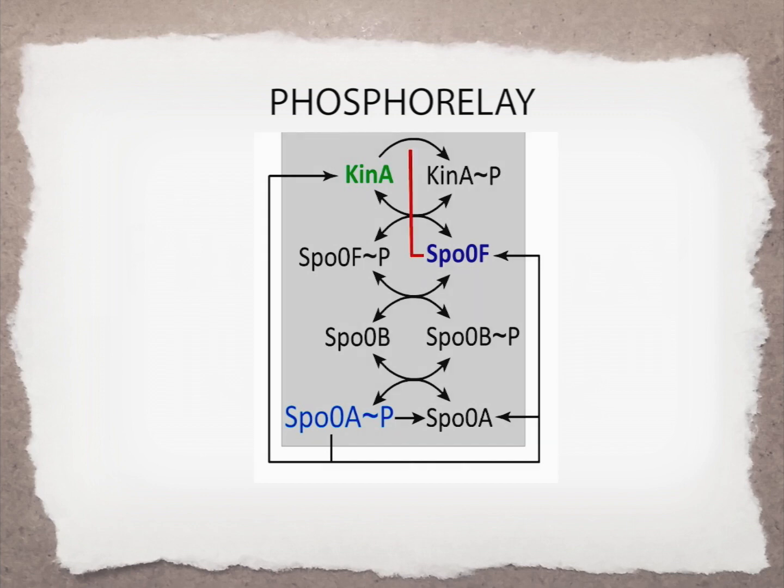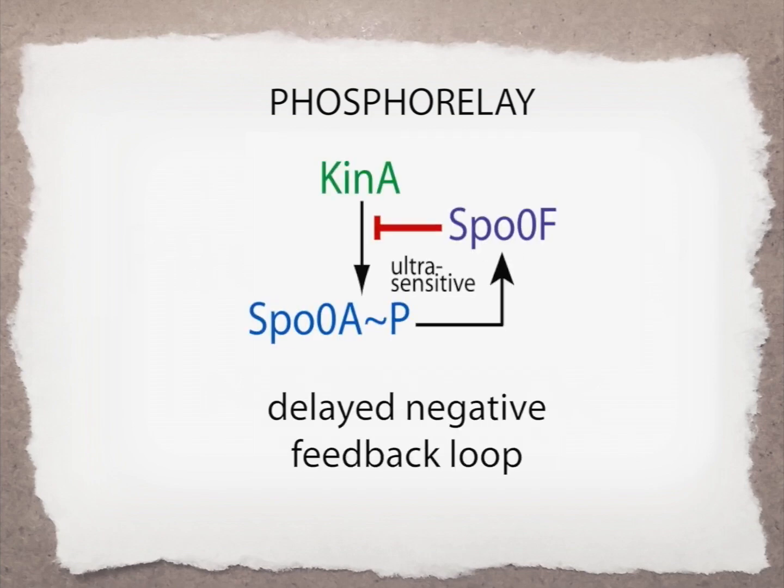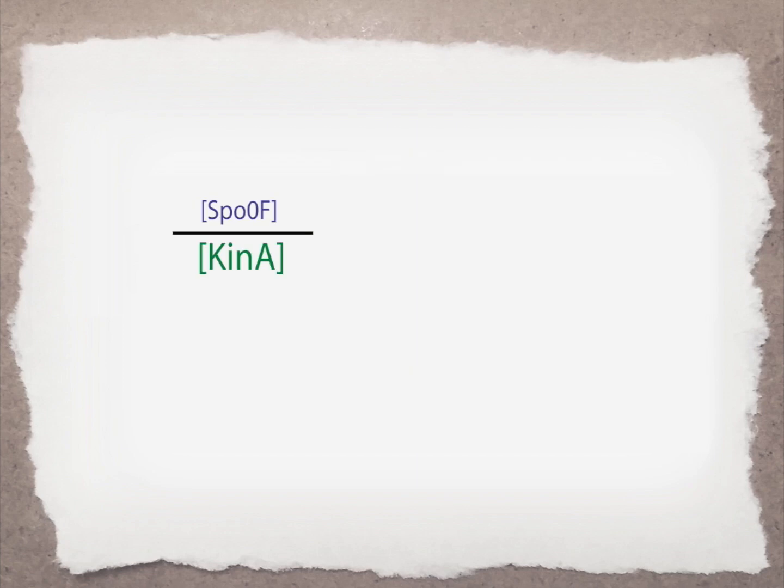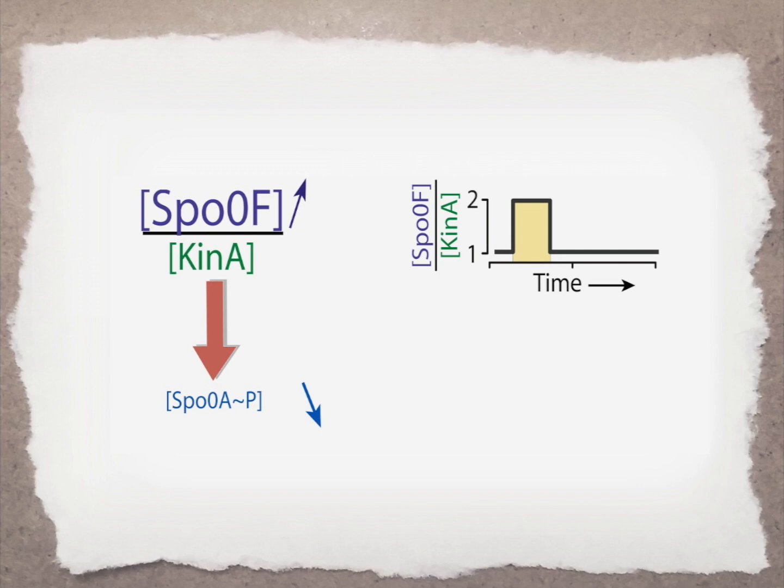In fact, due to the inhibition of kinase activity by Spo0F, the phosphorelay acts like a delayed negative feedback loop. Our model made two specific predictions. First, increases in Spo0F to kinase ratio decrease Spo0A activity. Second, transient increases in this ratio cause an overshoot in Spo0A activity resulting in a pulsed response.